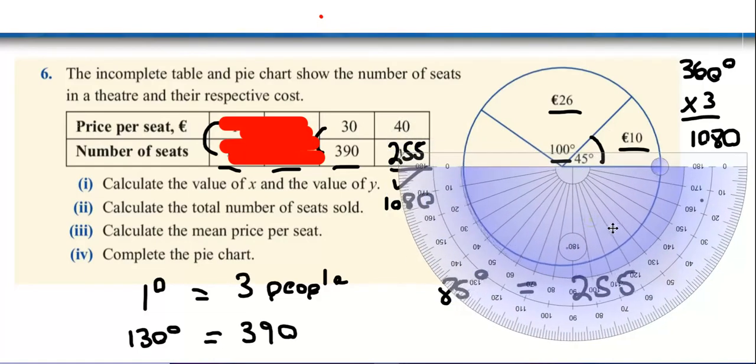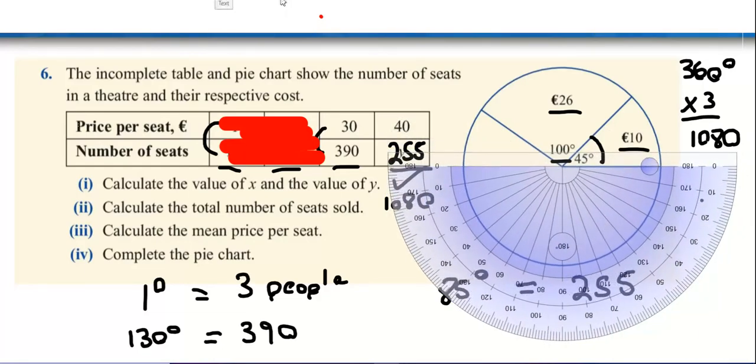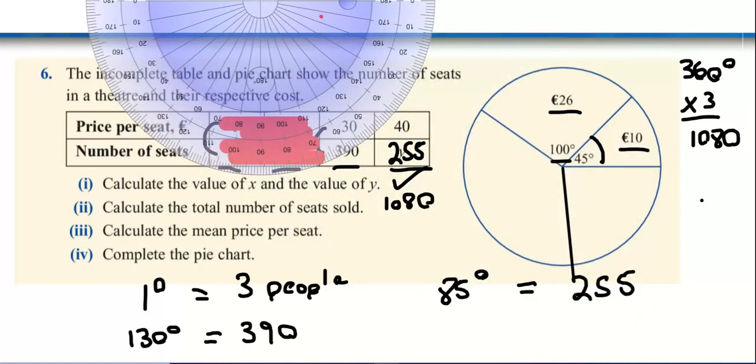So I'm looking for 85 degrees. I'm going to do it down below. So here's my line. Start off here where the 45 ends. And go to 85. So you can see it here. 10, 20, 30, 40, 50, 60, 70. Halfway between 80 and 90. Go back up to the edge of the circle. And there you go. That's my 85 degrees. Now, what does that represent? 85 degrees represents the 40 euro tickets. And this must leave over 130 degrees. That represents the 30 euro tickets.